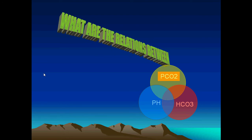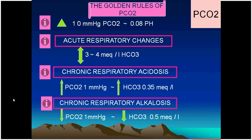The relation between CO₂ and pH is critical. The golden rule: a change of 10 mmHg in PaCO₂ will affect the pH by 0.08. If CO₂ is retained by 10 mmHg, pH drops by 0.08 — from 7.40 to 7.32. Conversely, if CO₂ is washed out by 10 mmHg, alkalosis occurs and pH rises to 7.48.